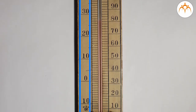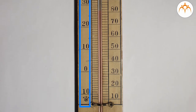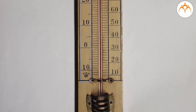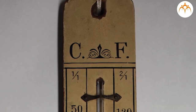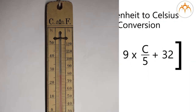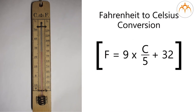Since that time, most English-speaking countries have officially adopted the Celsius scale. The conversion formula for a temperature expressed in Celsius to Fahrenheit is: F = (9 × C / 5) + 32.